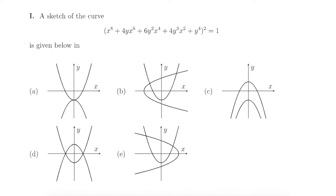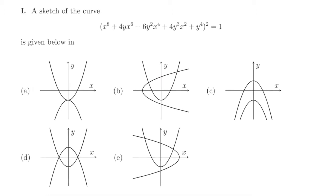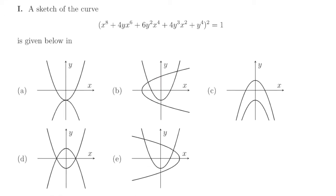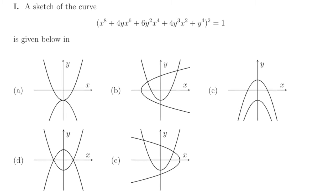This is an equation in terms of two variables x and y, and we have all sorts of powers in here. We need to find what the graph of this equation would look like, and we're given five different options below.